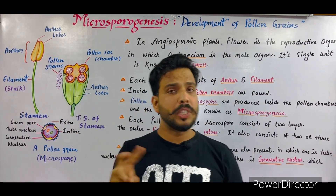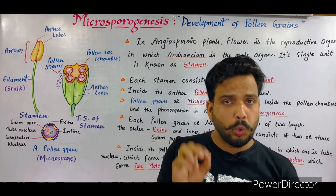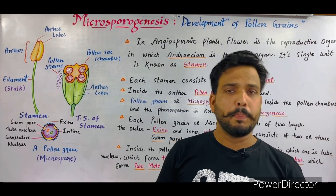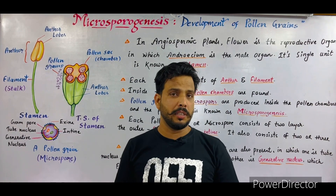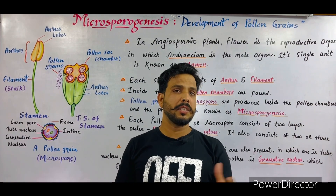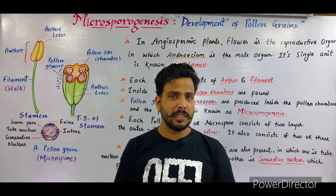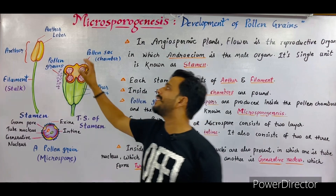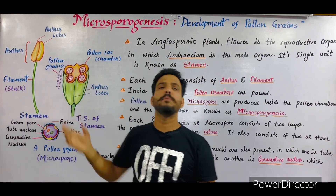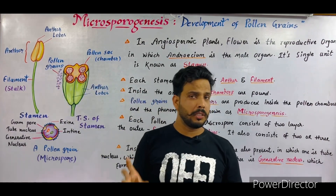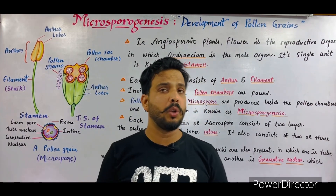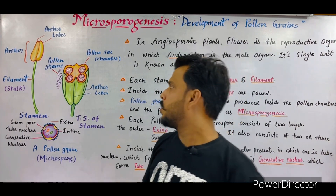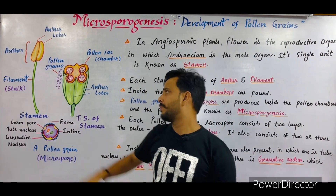In most plants, two anther lobes are present, and this type of anther is termed a dithecous anther. But in some cases, like family Malvaceae — the plant Hibiscus rosa-sinensis, that is china rose — it consists of a single anther lobe, and this type is termed a monothecous stamen.